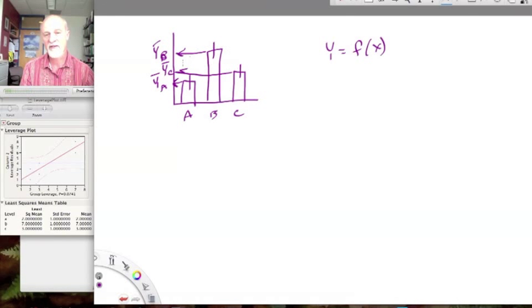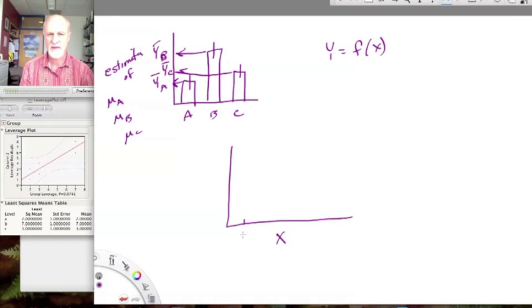So in a way, we have a continuous variable being predicted. So these are estimates of mu A, mu B, and mu C. And underlying these estimates are observations, right? So what we can do is we can actually take our observations and put them down here on the X.